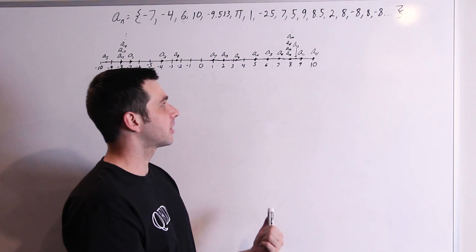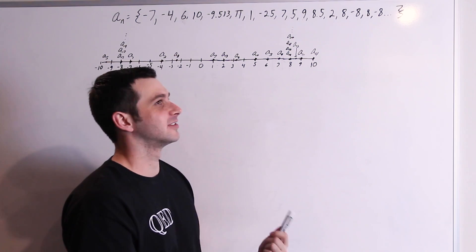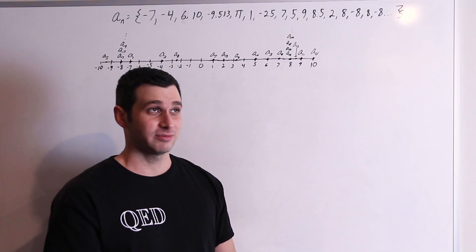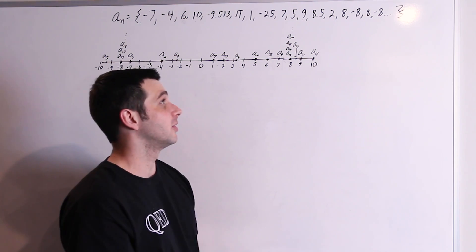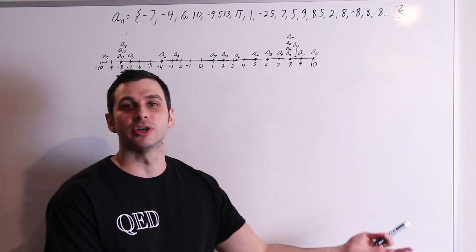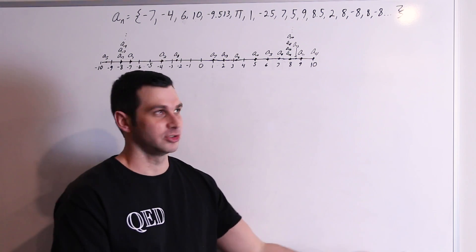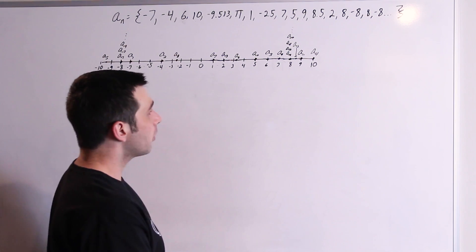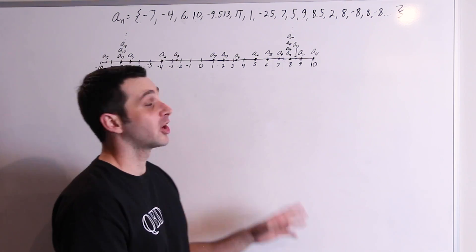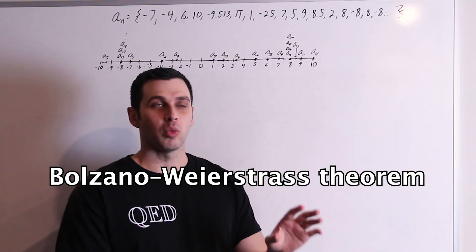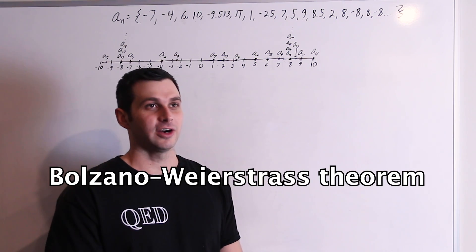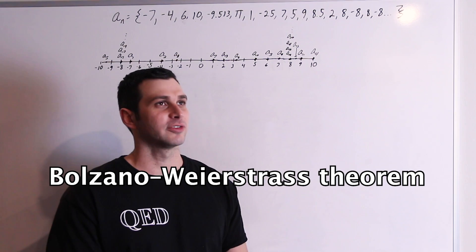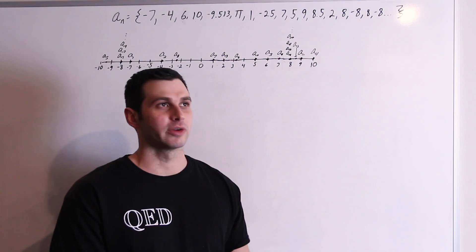I like this example we're going to do because pretty much anyone watching should be able to follow it. You could be in algebra 2 and you should be totally fine with this. So what we're going to prove is something called the Bolzano-Weierstrass theorem.